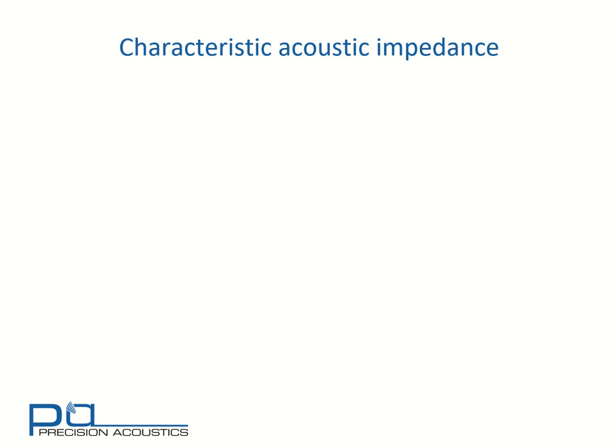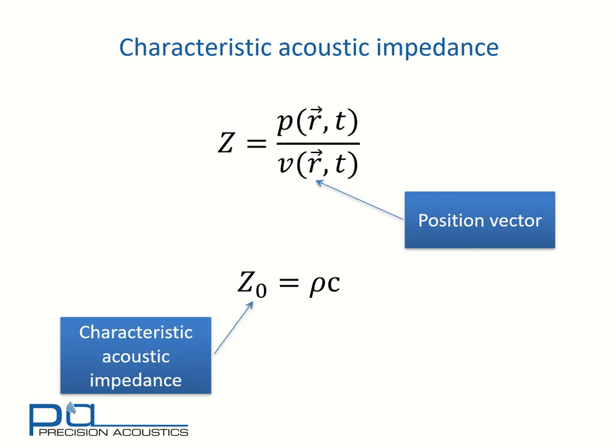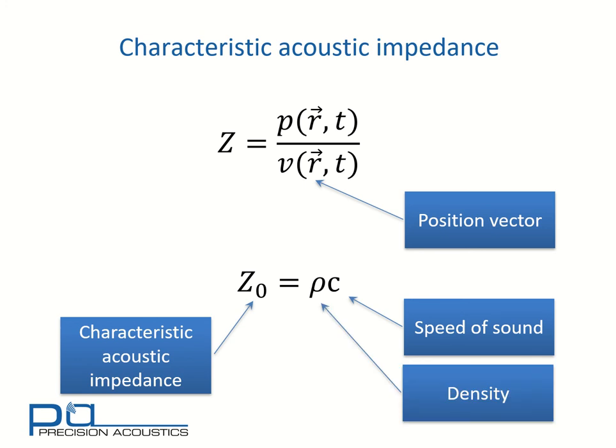We'll also look at various impedances. So instantaneous acoustic impedance is the instantaneous pressure divided by instantaneous particle velocity. And here we note that we're dependent on both the position vector and the time for these instantaneous quantities. But we may also be interested in characteristic acoustic impedance, Z naught, and this is the product of our speed of sound and density.